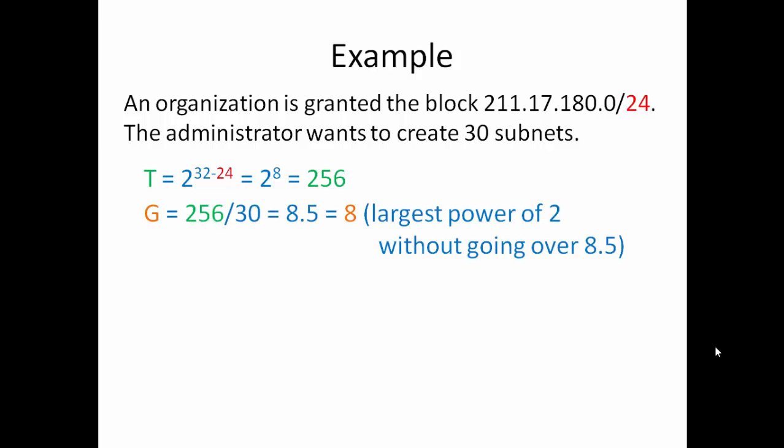Our second step is to find G or our individual group. We know we need 30 subnets so we'll take 256 and we'll divide it by 30. We get 8.5 which is not an even number. We say well 8.5 is a decimal and it's not a power of 2. What do I do with it? You simply go down to the next number that is a power of 2. In this case it's 8. You don't want to go up. You want to go down. So we have 8 in a group.